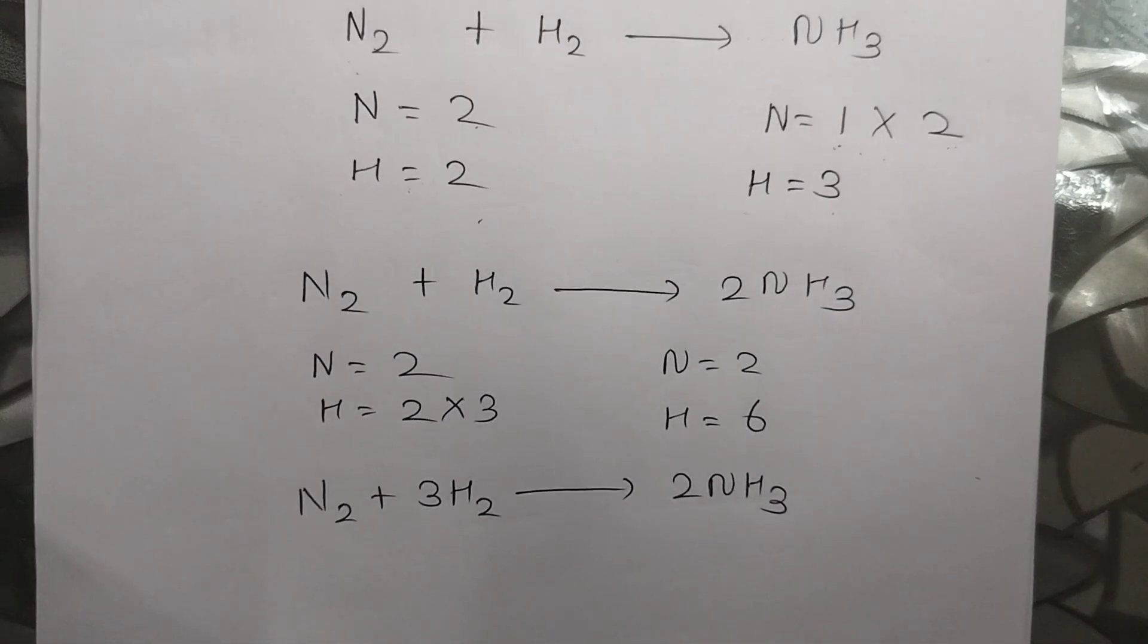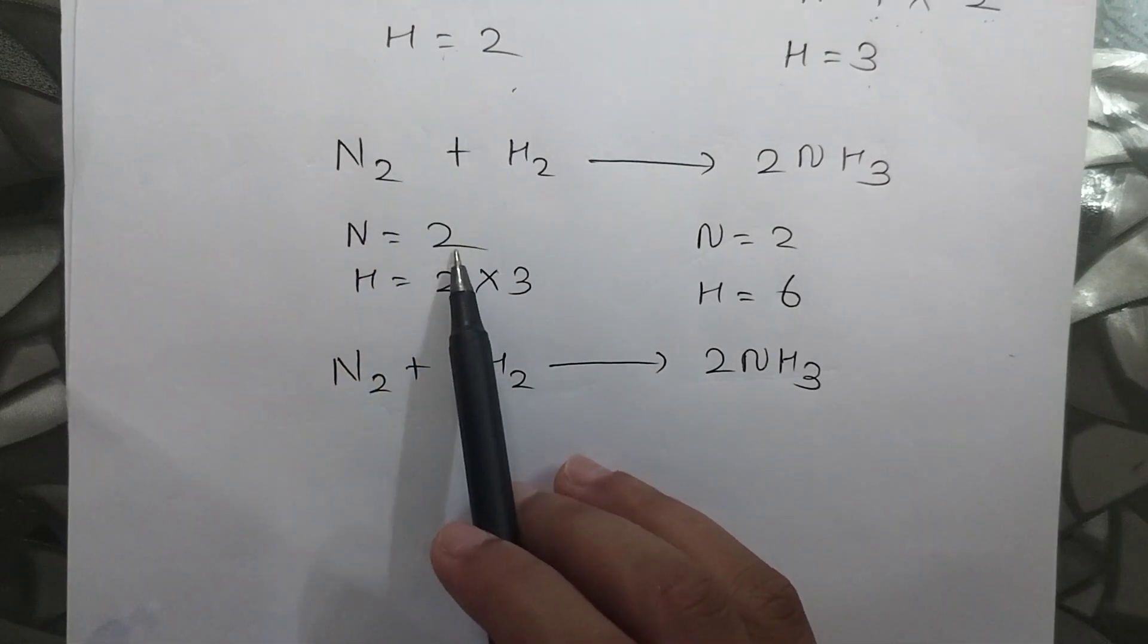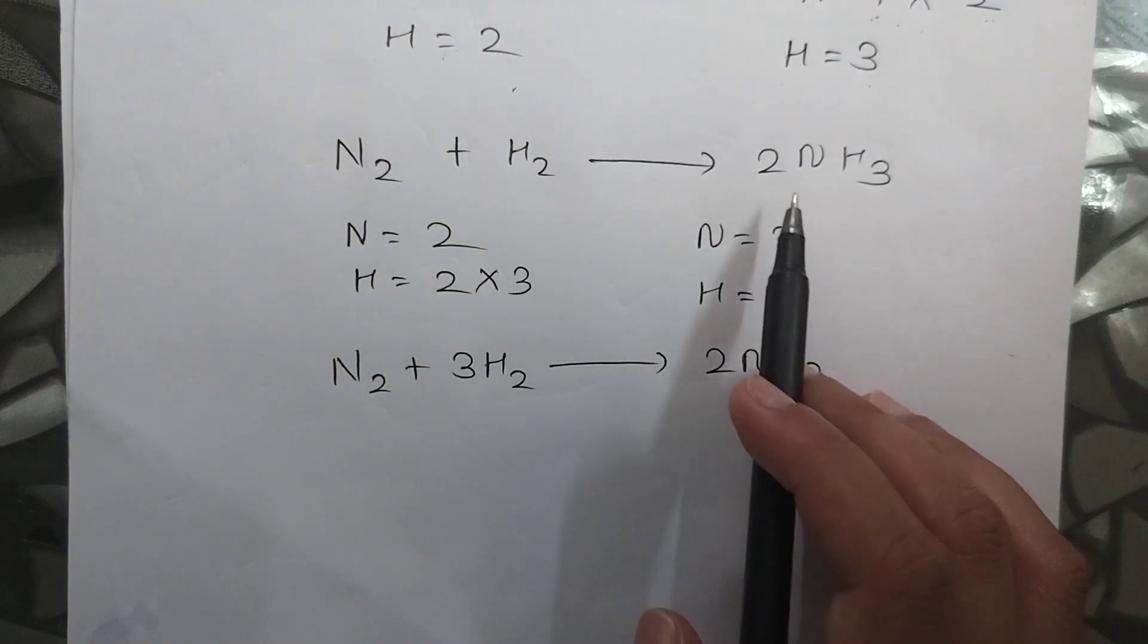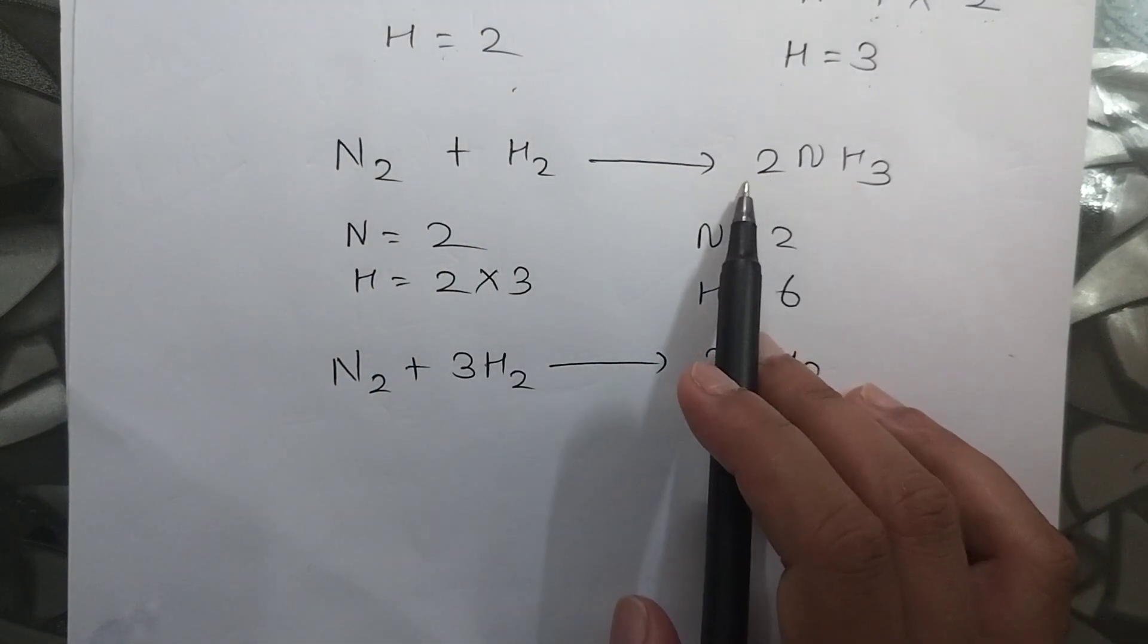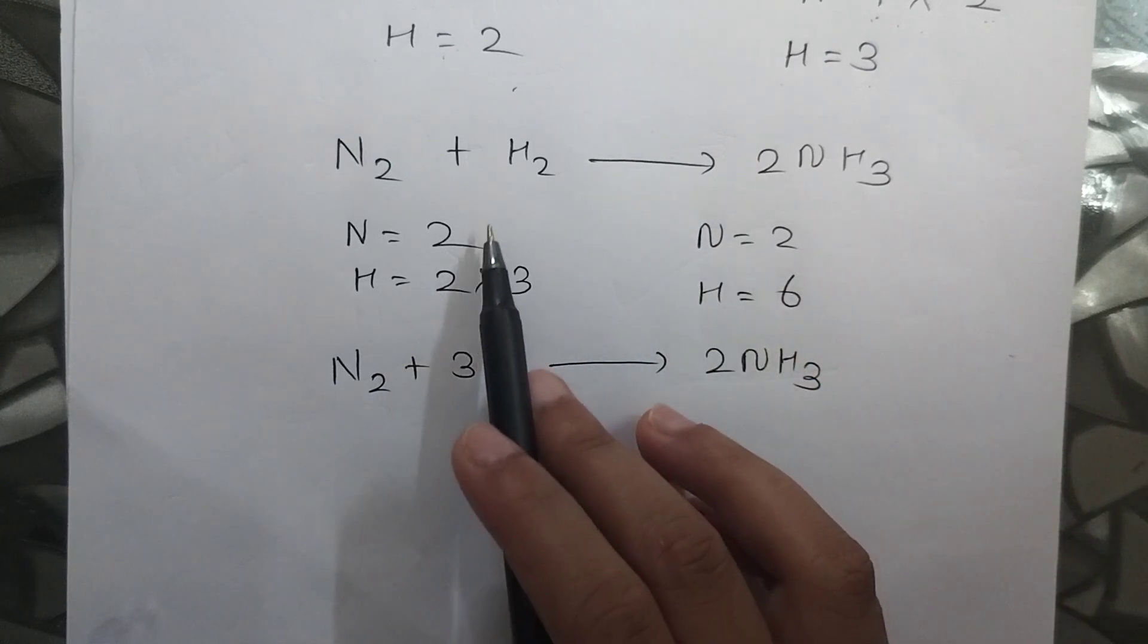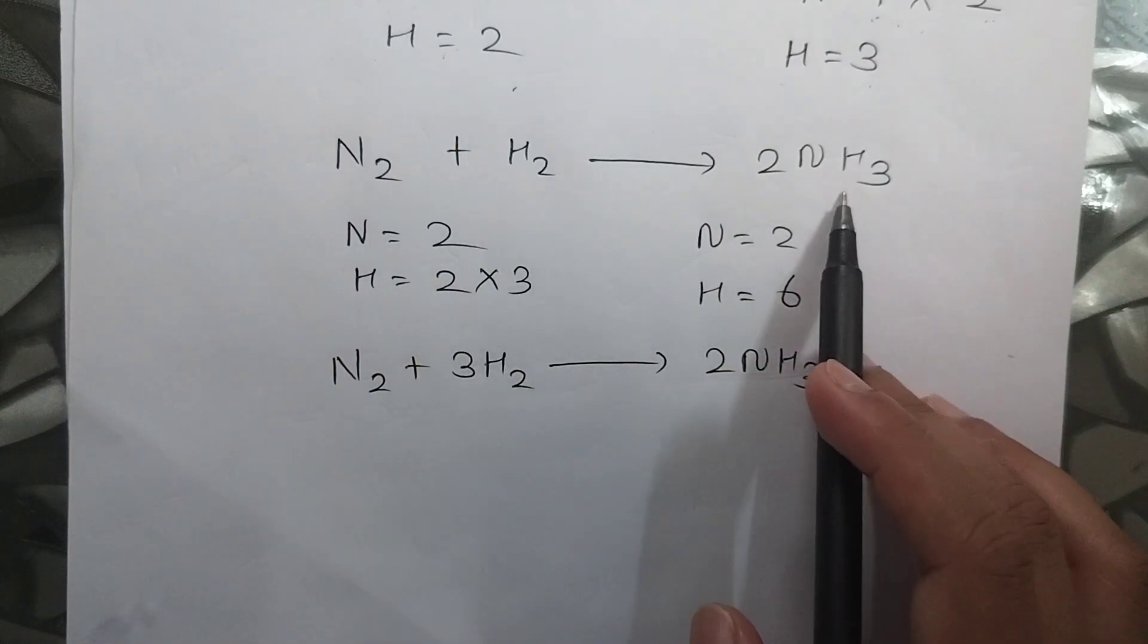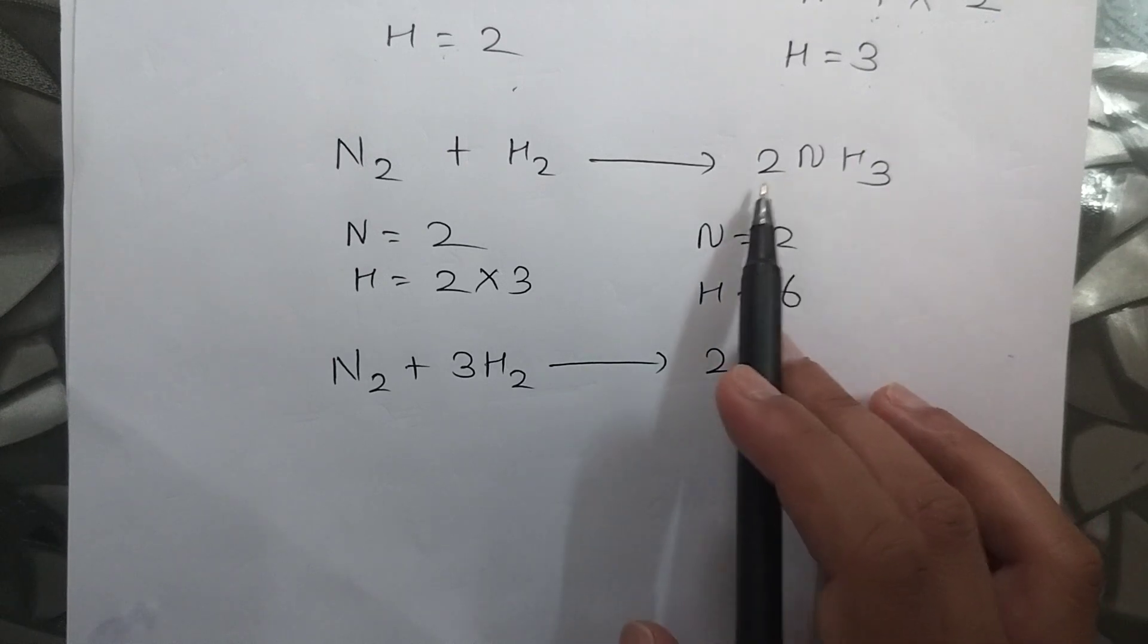So now again we will see whether it is balanced or not. So nitrogen over here is 2. Nitrogen over here is again 2 because 2 is written over here. So nitrogen is 2. Hydrogen over here is 2.